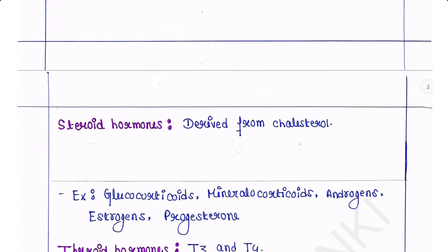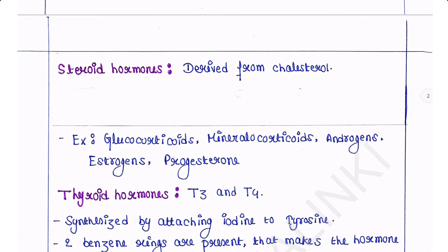Steroid hormones are derived from cholesterol. Therefore these forms of hormones are lipids.